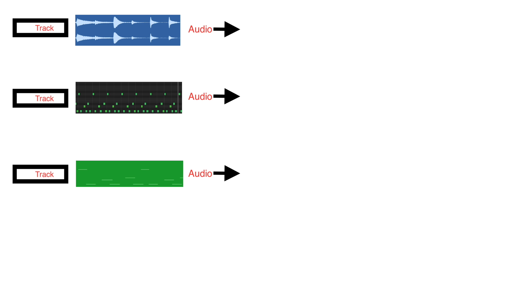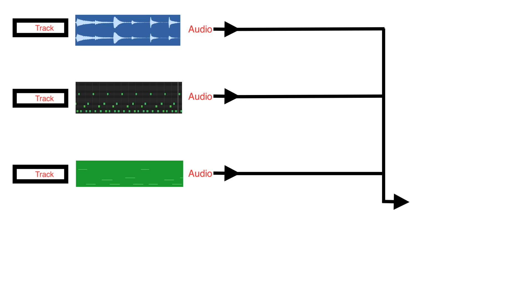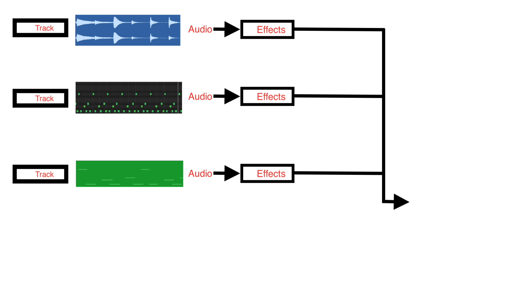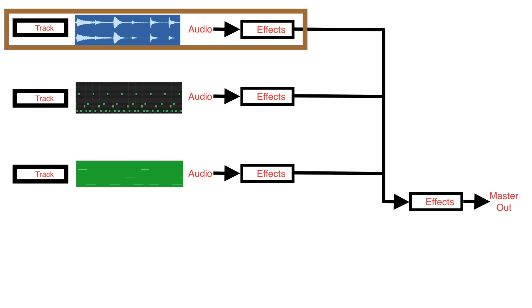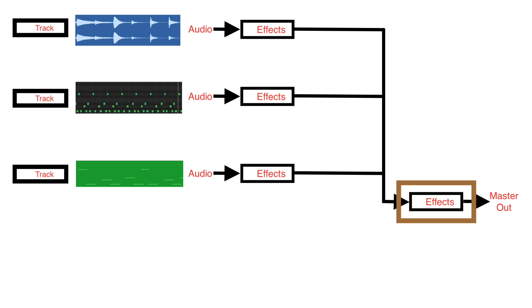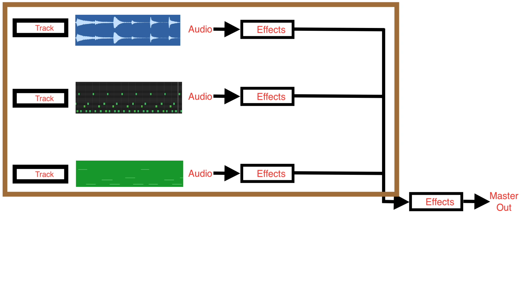The signal flow within any DAW basically looks like this: it starts with the individual tracks — audio tracks, MIDI tracks, loops, or anything that makes sound — and the sound from these individual tracks all converges together to the master output. You can put processing such as EQ or compression on these individual tracks, and you can also put that kind of processing on the master output. When you put an EQ on an individual track, it only affects the sound from that track. But if you put the EQ on the master output bus, it affects the combination of all of those tracks together.